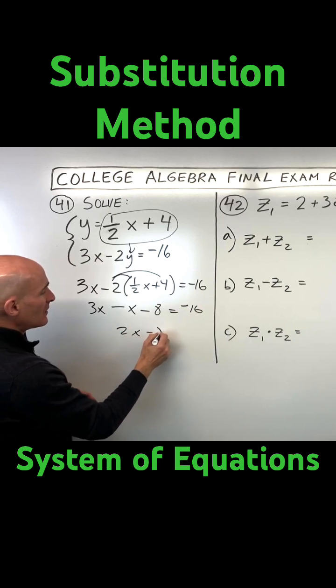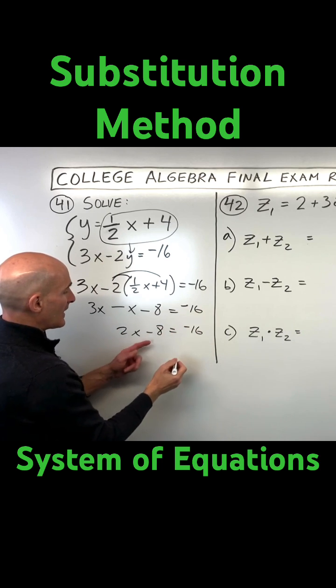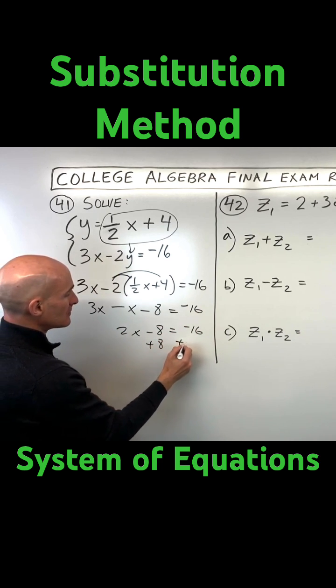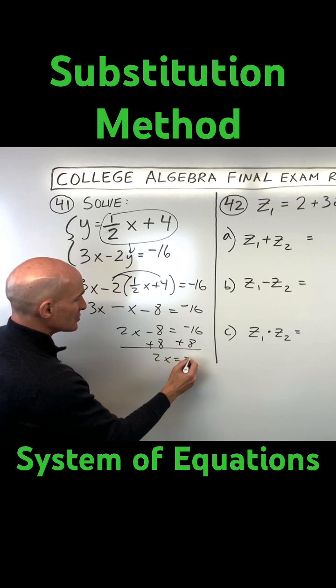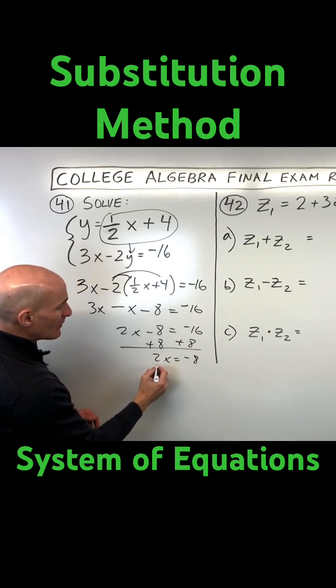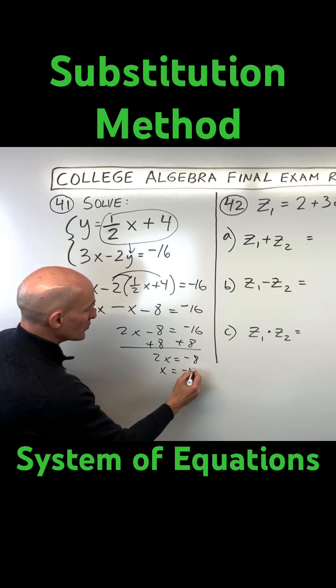So we've got 2x, and if we add 8 to both sides, we have 2x is equal to negative 8. If we divide both sides by 2, x equals negative 4.